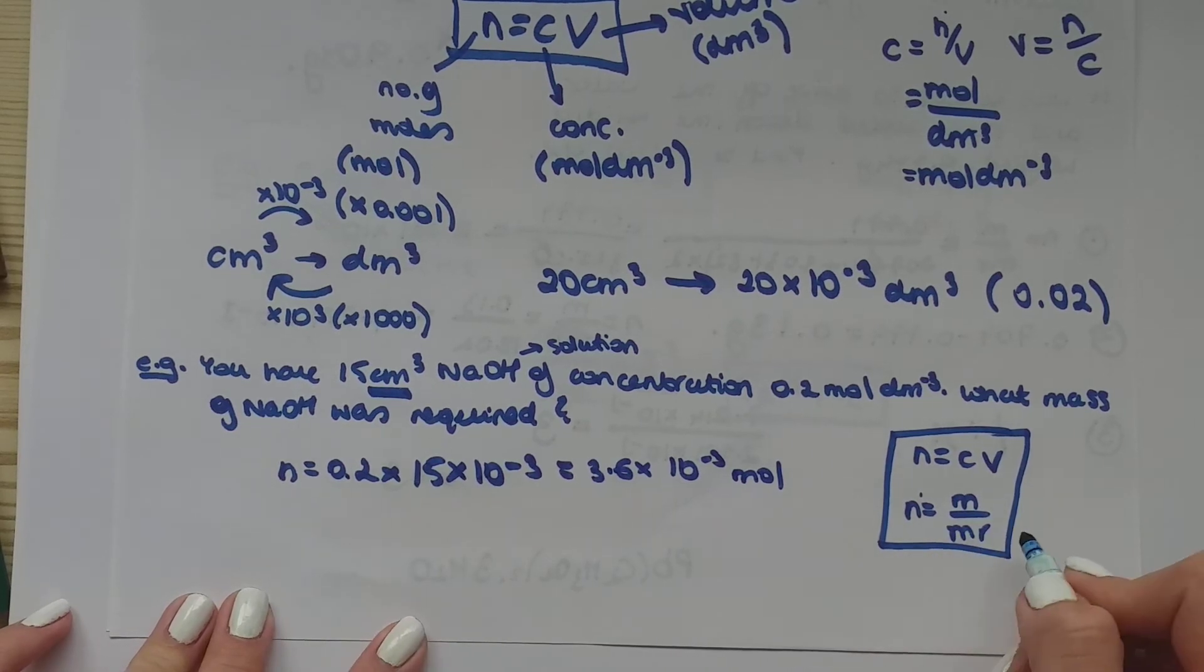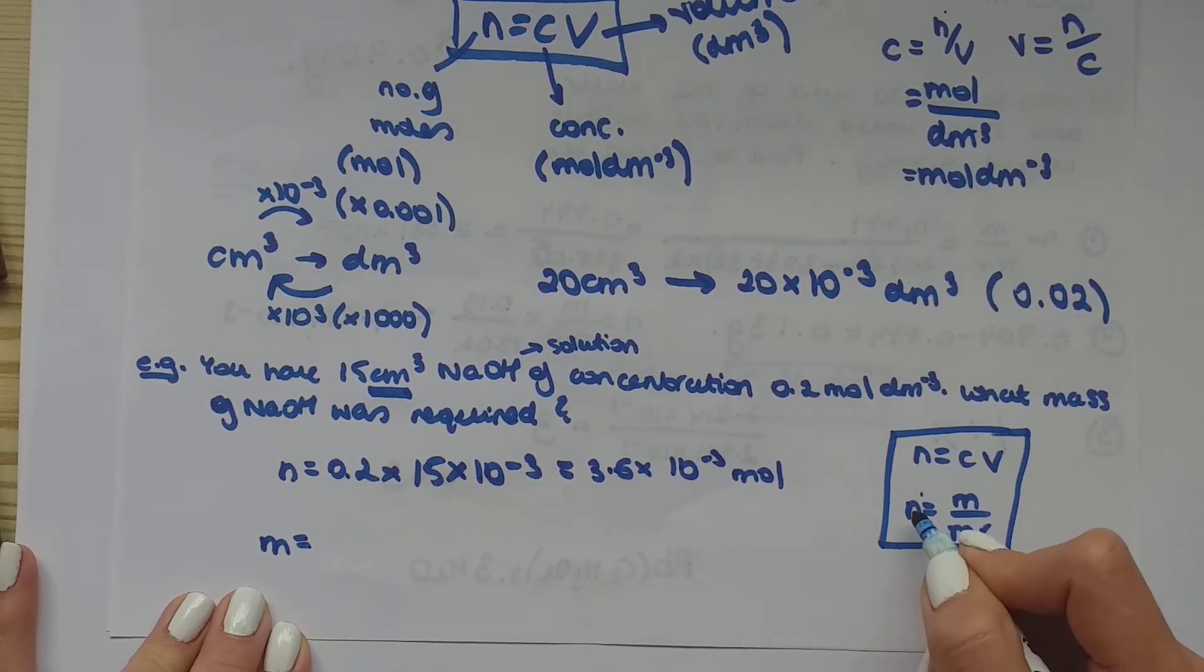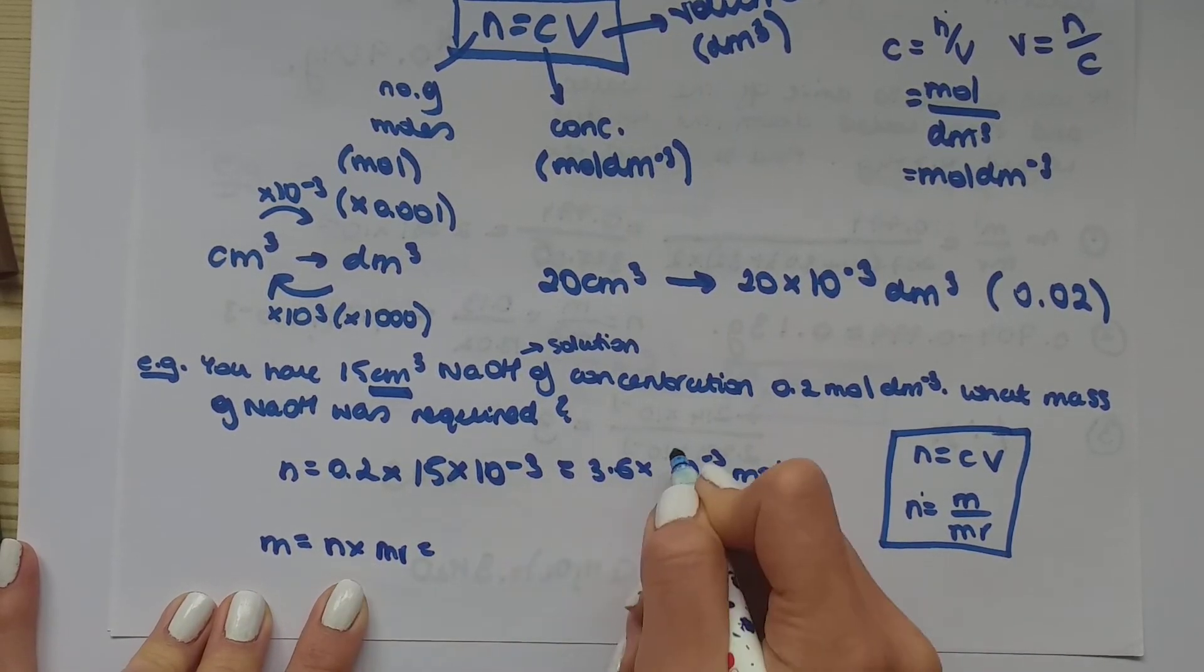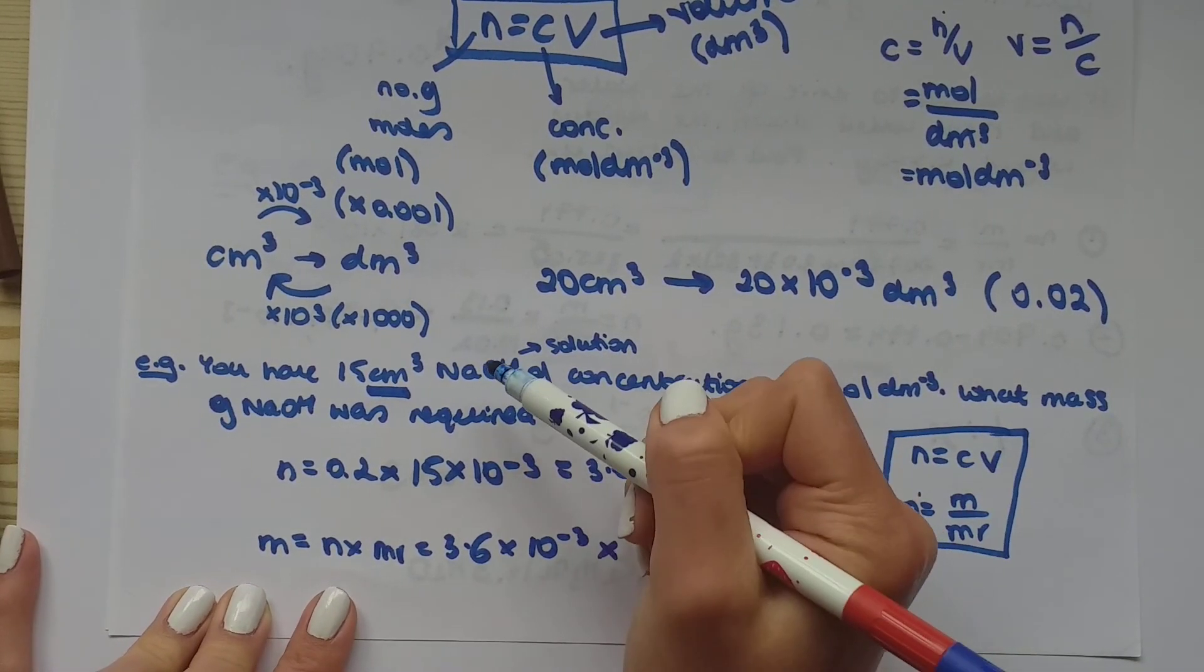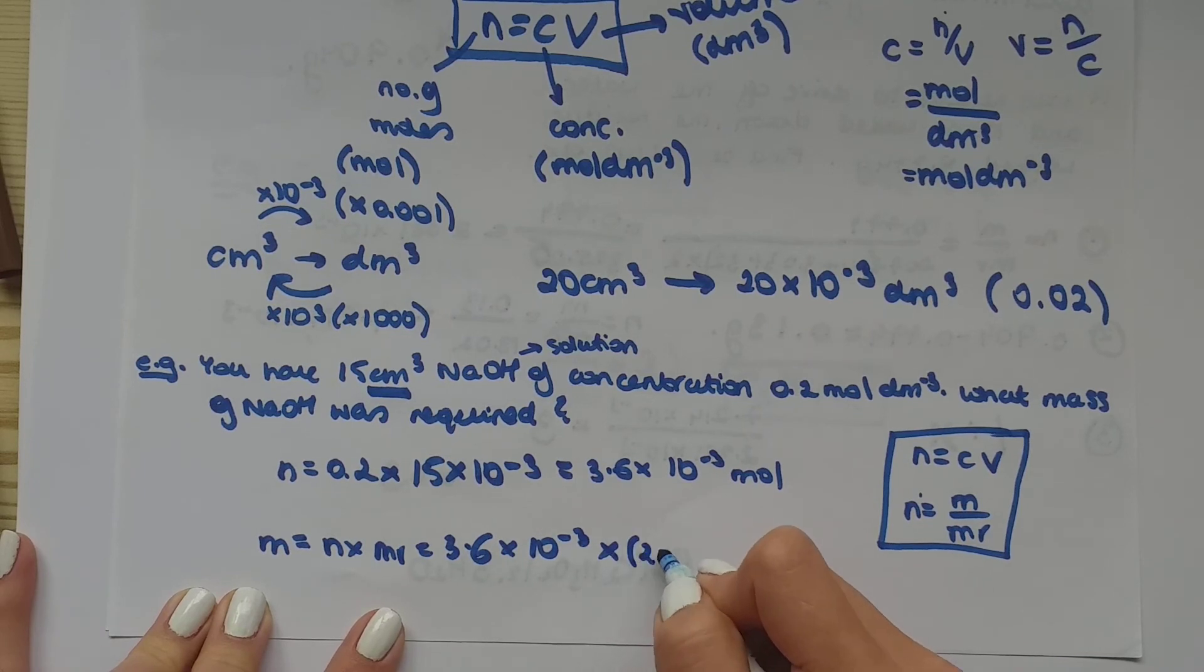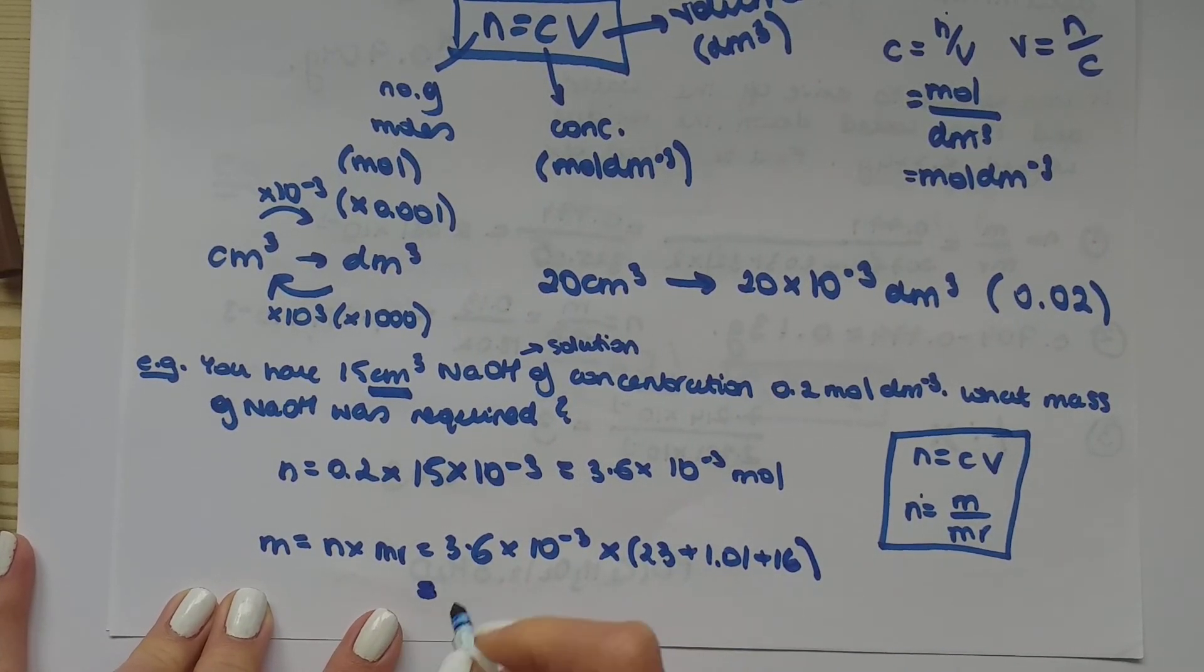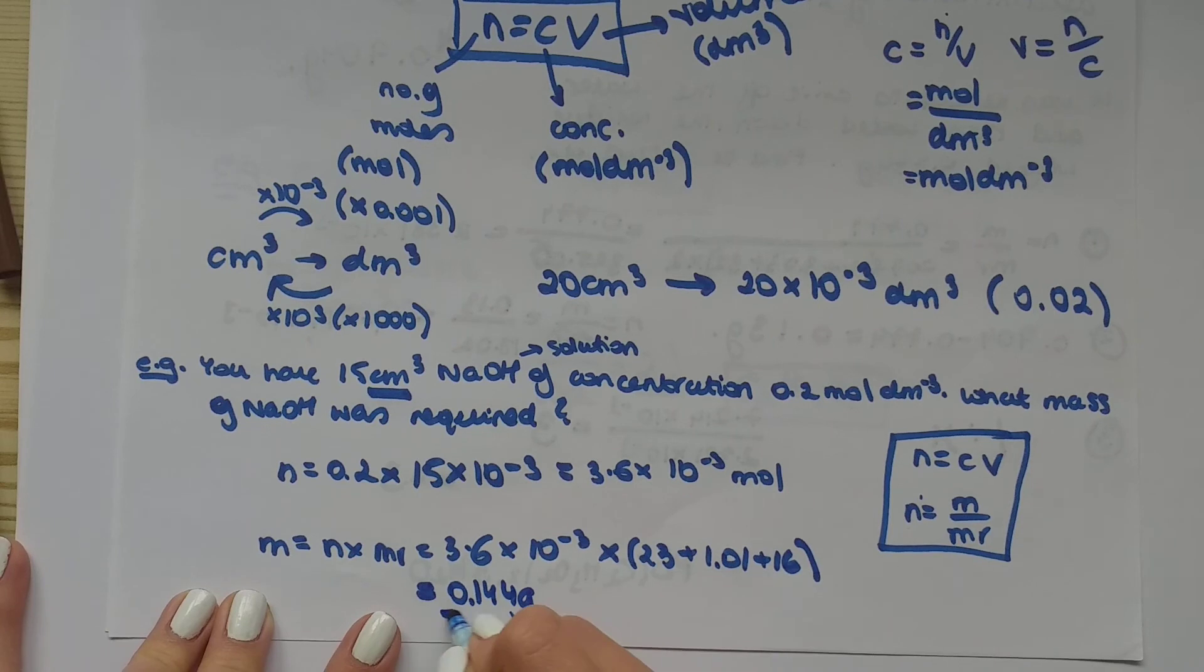Now you're trying to find the mass. So let's rearrange the equation. Mass equals n times mr because it was divided here. So times on the other side. We know the number of moles now 3.6 times 10 to the minus 3. We know the mr. We can calculate it. Sodium is 23 plus hydrogen is 1.01 plus oxygen is 16. So we multiplied it by all of this, which gives you a final answer of 0.144 grams.